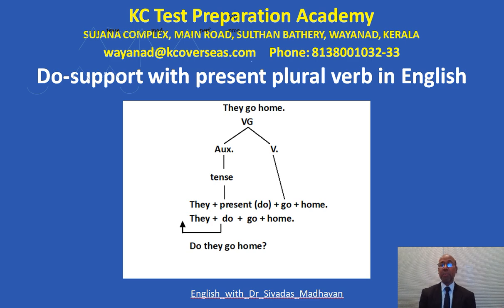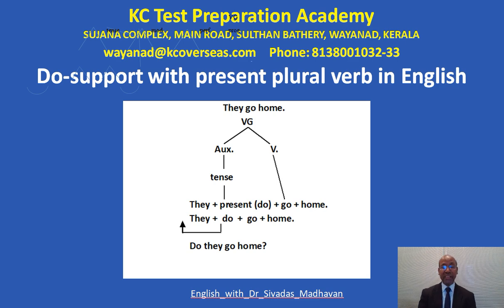The example given here is: they go home. Go is the verb group and it has auxiliary and main verb. Auxiliary consists of tense and the tense is present here. And there is no other auxiliary, so we need do support to make it a question. So the structure of the sentence is: they plus present do plus go plus home.